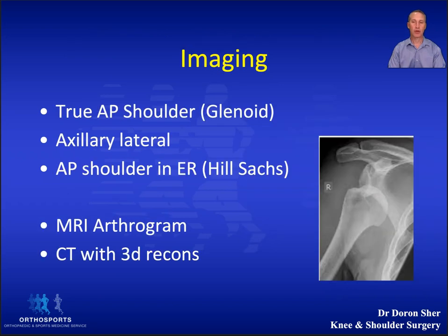In terms of imaging we always start with plain x-rays, but these days it's almost always followed by more advanced imaging. Plain x-rays include an AP shoulder x-ray with the arm in external rotation, a true AP known as a Gratiot view, a scapular lateral, and an axillary lateral.